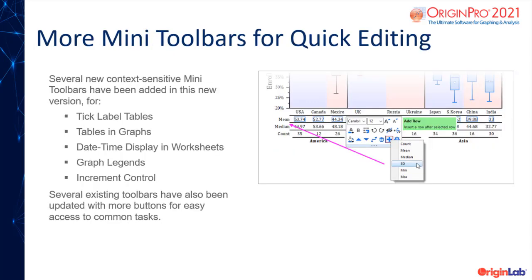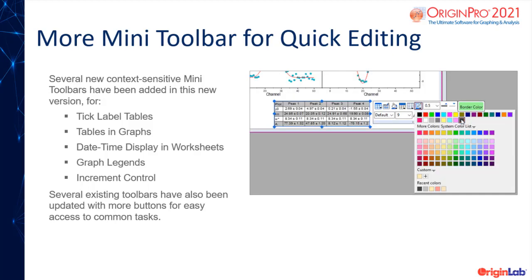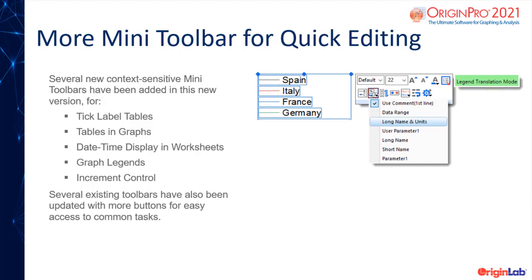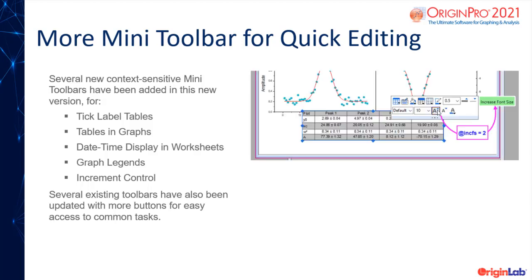Several new context-sensitive mini-toolbars have been added in this new version. This includes mini-toolbars for tick label tables, tables and graphs, date-time display and worksheets, graph legends, and setting increment controls. In addition, several existing toolbars have also been updated with more buttons for easy access to common tasks.